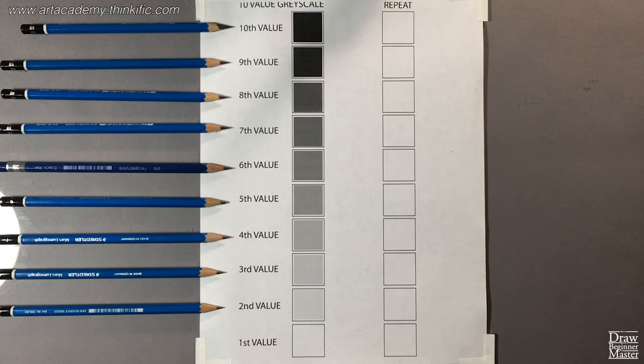To begin, download the 10 value grayscale I created for you from the downloadable materials section of the course, and print it out on regular 8.5x11 printer paper. It should look just like the worksheet you see on screen right now. And when you're finished with this lesson, be sure to keep this chart to use as a handy reference guide to help you find the right pencil and value in the future.